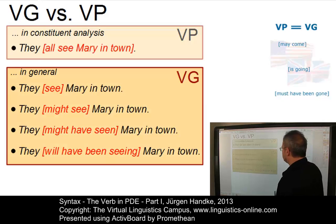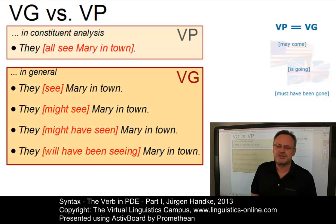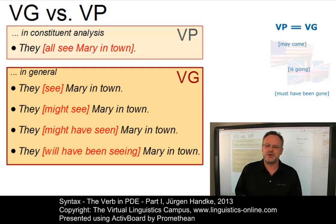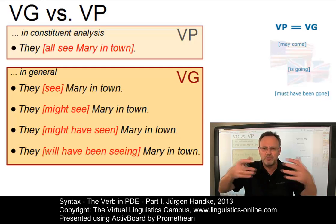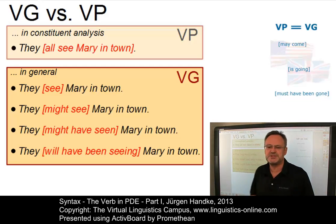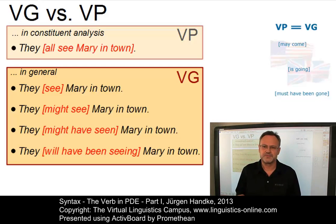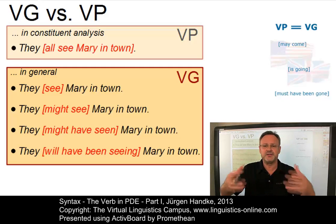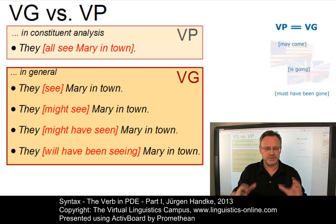In order to draw a distinction, we will use the term verb group to include all verbal categories — all component parts of the syntactic function verb — such as see, might see, might have seen, and will have been seeing. This distinction is drawn in many grammar books and on the VLC, and we will strictly adhere to it.